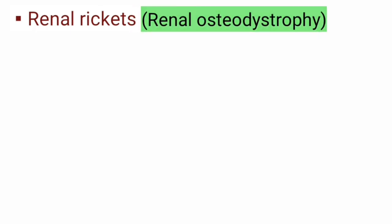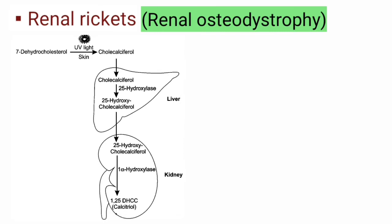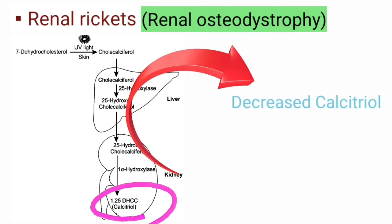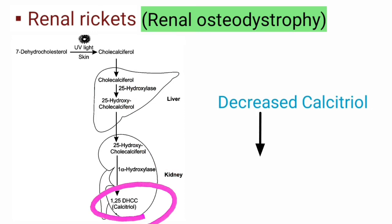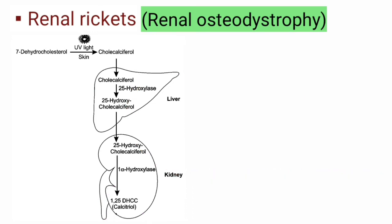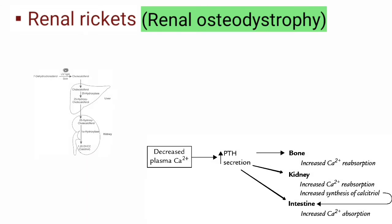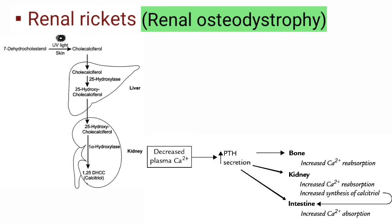Renal rickets, also known as renal osteodystrophy: The last step in the activation of vitamin D takes place in the kidneys by the action of the enzyme 1-alpha hydroxylase. In chronic kidney failure, synthesis of calcitriol in the kidney is impaired and calcium absorption is impaired, leading to deficiency of calcitriol, which causes hypocalcemia and hyperphosphatemia.